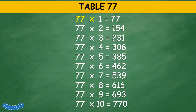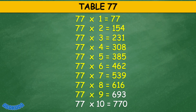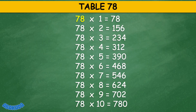Table 77: 77 times 1 equals 77, 77 times 2 equals 154, 77 times 4 equals 1675, 77 times 7 equals 166, 77 times 8 equals 616, 77 times 9 equals 693, 77 times 10 equals 770.